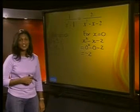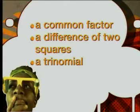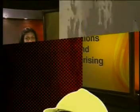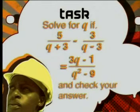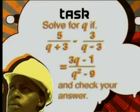Let's summarize what we've learnt. If an equation includes a fraction with a denominator that must be factorized, look for a common factor, a difference of two squares, or a trinomial. Here's a problem for you to do on your own: Solve for q if 5 divided by (q + 3) minus 3 divided by (q - 3) equals (3q - 1) divided by (q² - 9), and then check your answer.